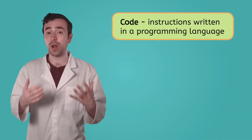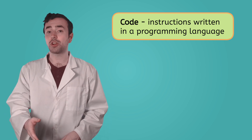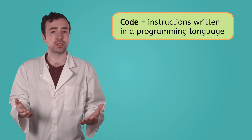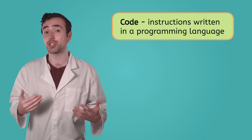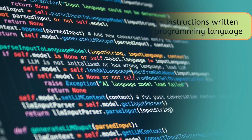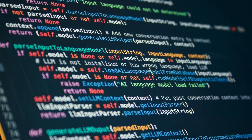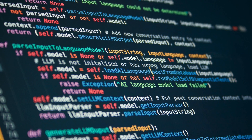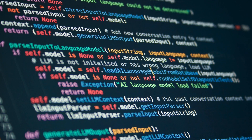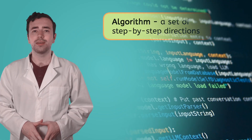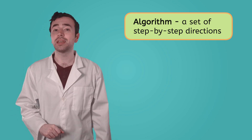Code is a way of writing instructions that computers can understand. These instructions are written in special languages called programming languages. They have specific rules for how the instructions have to be written. It can look kind of complicated, just like any language does before you study it. But when a computer engineer writes code, they're actually breaking down instructions into their simplest steps. A set of step-by-step directions in code is called an algorithm.